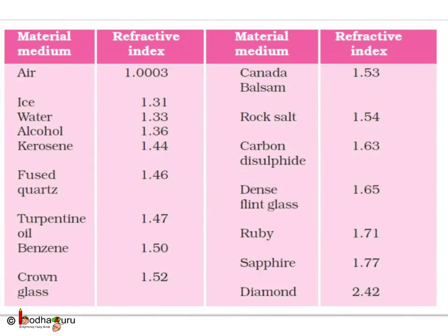Here are the refractive indices of different materials. Air has a refractive index of 1.0003, which is very close to 1, meaning the speed of light in air is very close to the speed of light in vacuum. The higher the refractive index, the denser the material. This also means the slower the speed of light when it enters that medium from a medium of lesser refractive index, and more the light is bent towards the normal as light moves from a rarer to a denser medium.